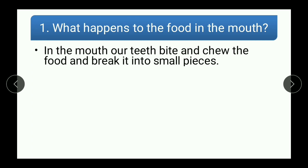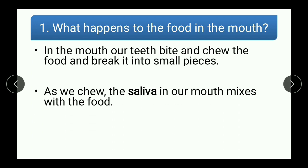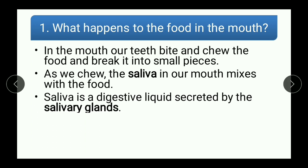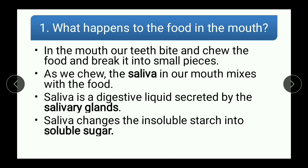In the mouth, our teeth bite and chew the food and break it into small pieces. Second point, as we chew, the saliva in our mouth mixes with the food. Third point, saliva is a digestive liquid secreted by salivary glands. Last point, saliva changes the insoluble starch into a soluble sugar.